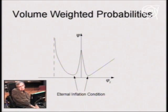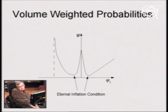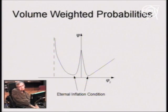Only certain universes will contain life. I have shown that standard field theory, applied to quantum gravity, leads to the spontaneous creation of universes out of nothing. If there are scalar fields with a general landscape-like potential, there will be many different kinds of universes produced. Some, at least, would be like the universe we observe.